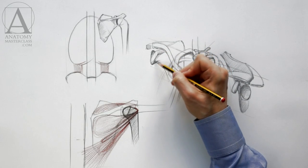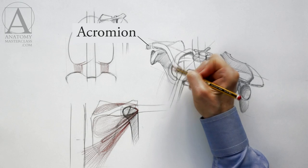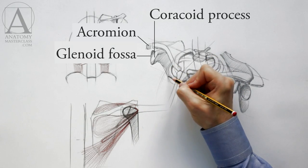The same parts of the shoulder blade can be seen on another scapula, which are the acromion, the glenoid fossa, and the coracoid process.